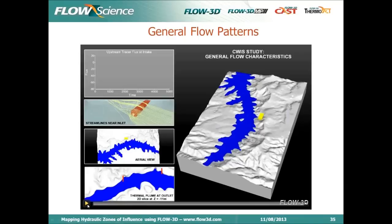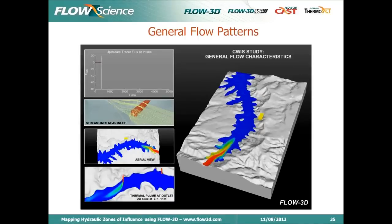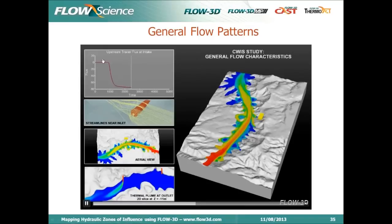I have a little animation. We can get an idea of what's going on by looking at the general flow patterns. To do this, we release a tracer all the way upstream and watch it meander downstream. On the top left, we can look at the tracer flux intake, which as expected finds its place around 80 cubic meters per second. We can look at streamlines near the inlet — reassuringly, the fluid is being aspirated into the intake. We also have an aerial view and the thermal plume shown separately on the bottom left.